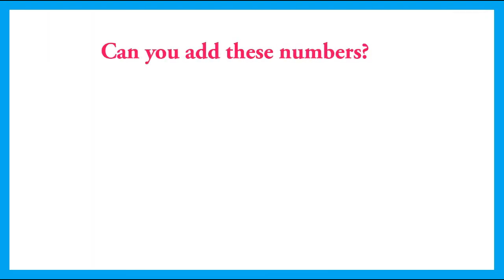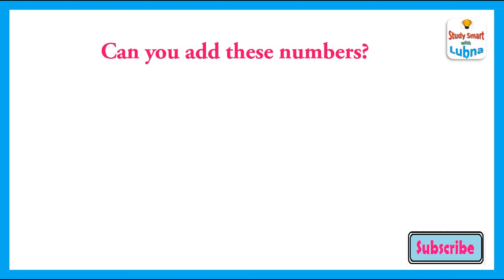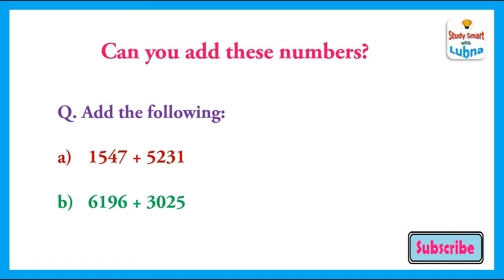Can you add these 4-digit numbers? Two 4-digit numbers are given and you have to add them. Part A: you have to add 1547 and 5231. Part B: you have to add 6196 and 3025. Good luck and thank you.